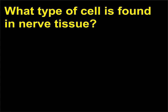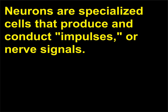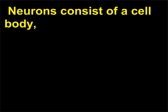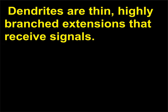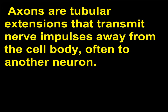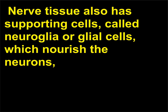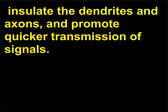What type of cell is found in nerve tissue? Neurons. Neurons consist of a cell body, which contains a nucleus, and two types of cytoplasmic extensions: dendrites and axons. Dendrites are thin, highly branched extensions that receive signals. Axons are tubular extensions that transmit nerve impulses away from the cell body, often to another neuron. Nerve tissue also has supporting cells called neuroglia, or glial cells, which nourish the neurons, insulate the dendrites and axons, and promote quicker transmission of signals.